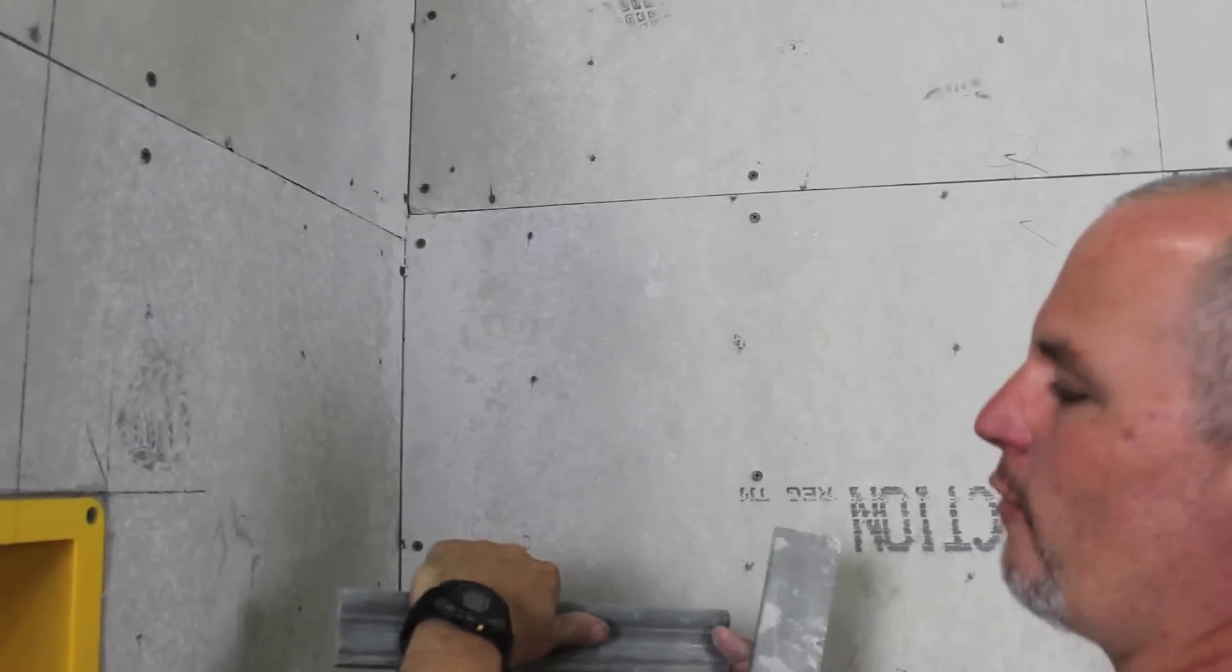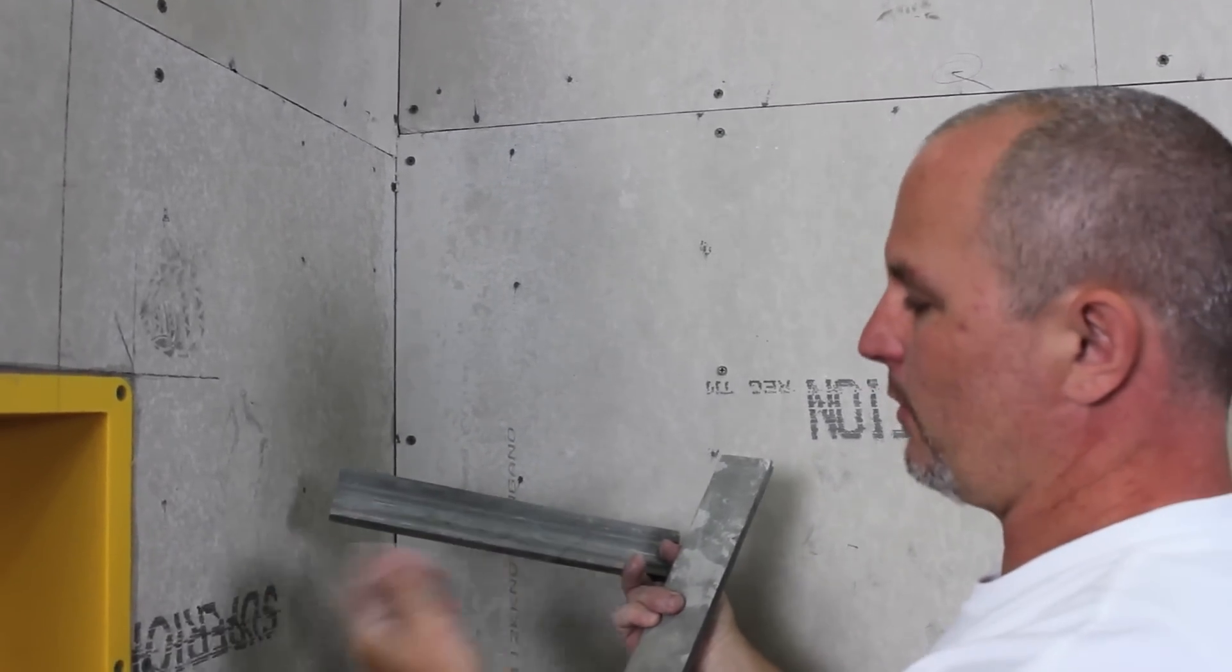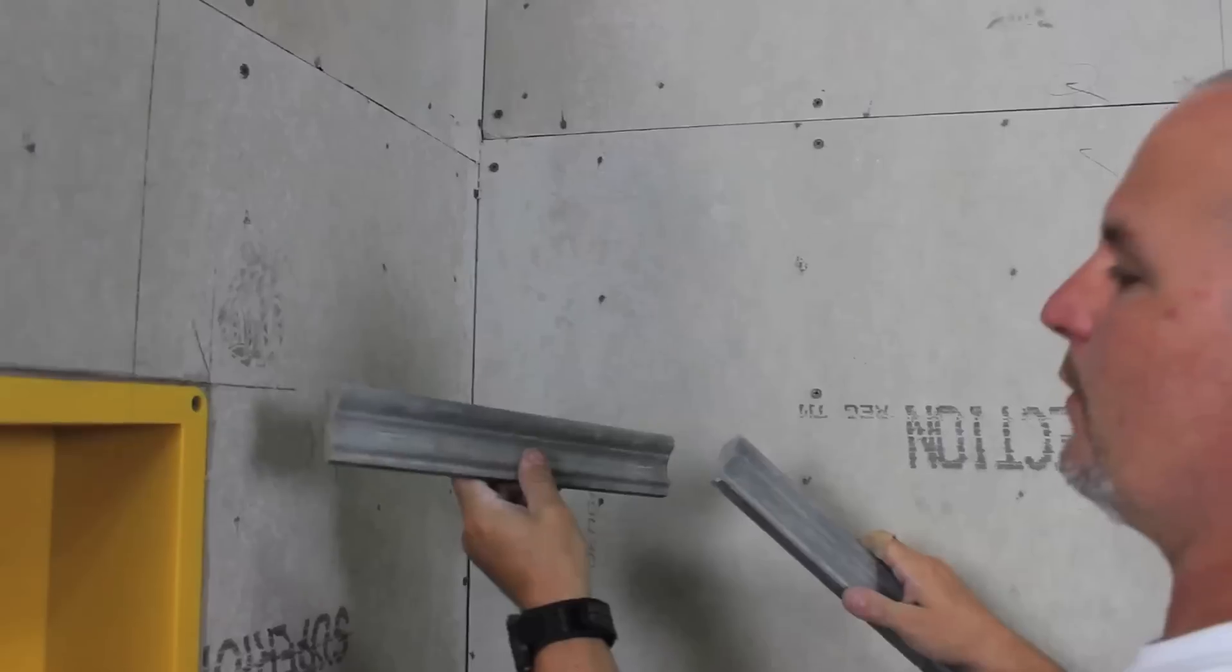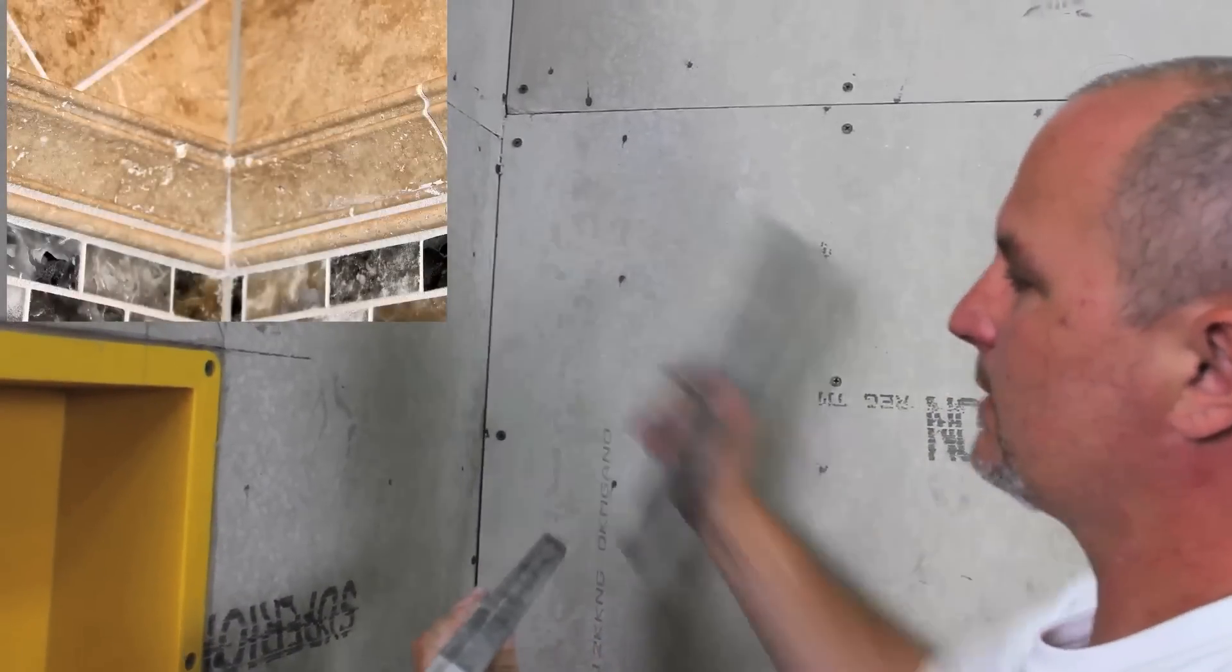When you're dealing with some sort of a profile, whether it's a pencil or a Barnes or a chair rail, this happens to be a Barnes, what we want to do is we want to do an inside miter for any of our inside corners.